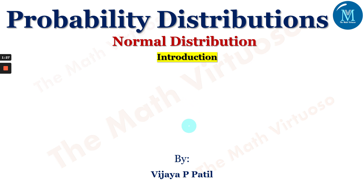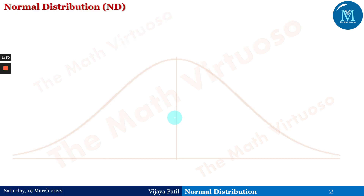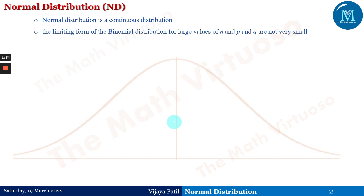Normal distribution is a continuous distribution. It is the limiting form of the binomial distribution for large values of n, where p and q are not very small. So exactly, this is a limiting case of the binomial distribution, as mentioned previously.